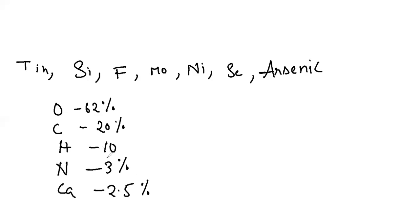Just remember: oxygen is the major percentage at 62 percent, carbon at 20, hydrogen at 10, nitrogen at 3, calcium at 2.5 percent. The remaining trace elements — phosphorus, chlorine, sulfur, potassium, magnesium, iodine, and iron — occur in very small quantities.